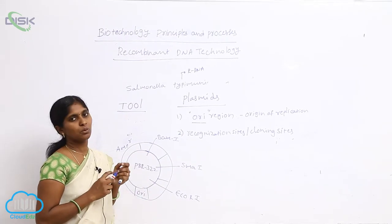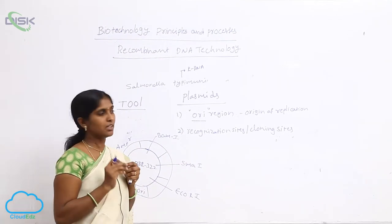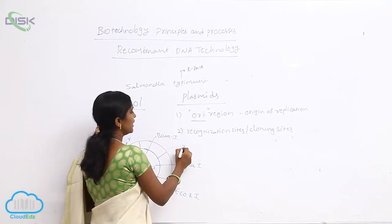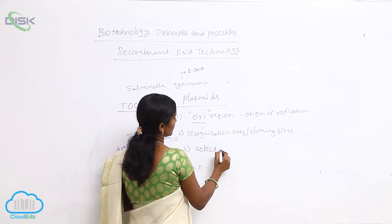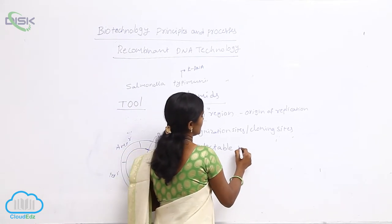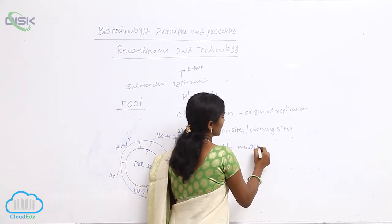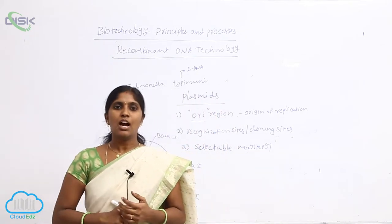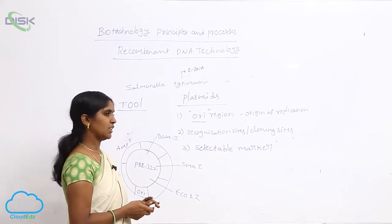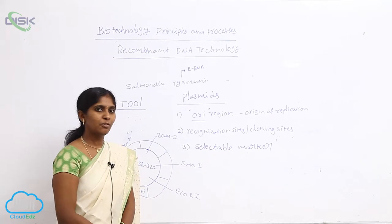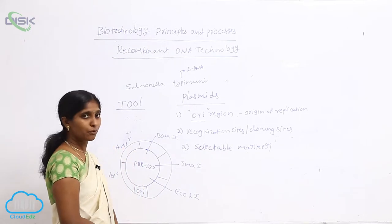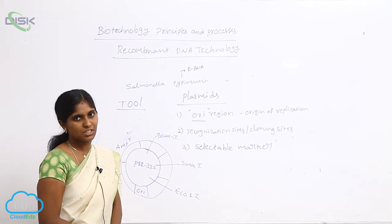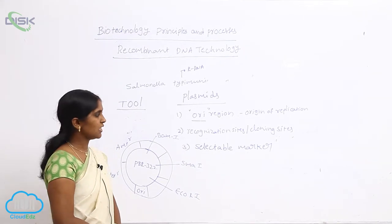Plasmids are very suitable for cloning sites and restriction enzymes. They also have selectable marker sites. What are selectable markers? After insertion of foreign DNA, if we want to find whether the foreign DNA was inserted or not, we go for selection and screening.